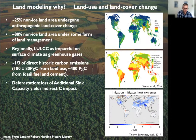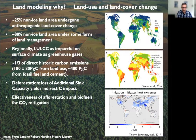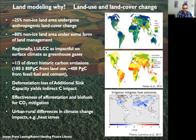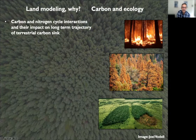Deforestation is particularly important for the global carbon budget because forests have a large capacity to accumulate carbon. Deforesting removes that additional sink capacity. There are big questions about the effectiveness of afforestation, reforestation, and biofuels for CO2 mitigation, which we probe using land models. Urban and rural differences in climate change impacts — especially heat stress in urban environments — are also important, as urban areas are warming faster than the rest of the world.